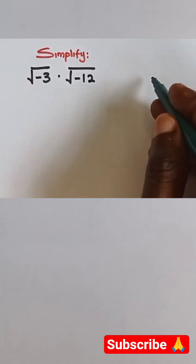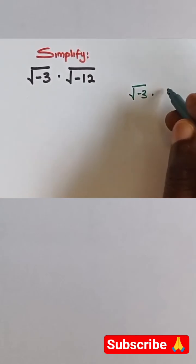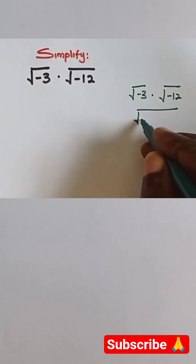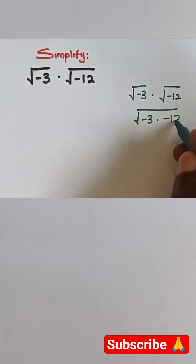Hi guys, welcome back to my channel. Let's solve this together. Now it is wrong to say √-3 multiplied by √-12 to be -3 multiplied by -12, and then it becomes +36 and the answer is 6.